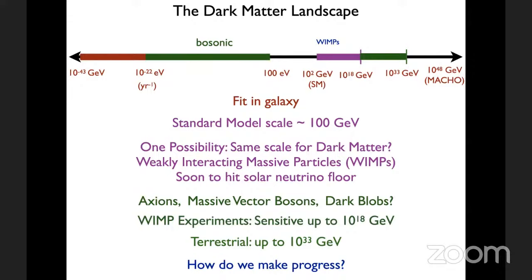Question: what is a dark blob? That is just a large composite state of dark matter. If you look at 10^48 GeV, you realize it's well above the Planck scale, so that can't really be a fundamental particle. What it can be is a composite system — I call them blobs. I'll talk about those more in tomorrow's lecture where we have a systematic way of probing that as well.